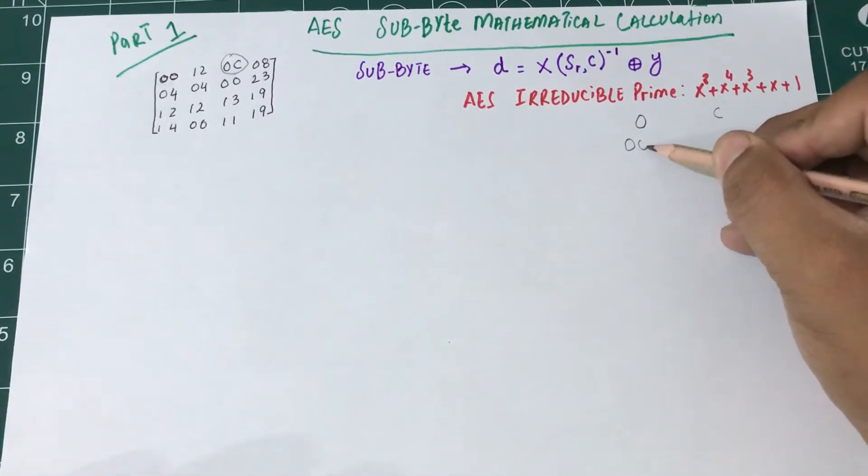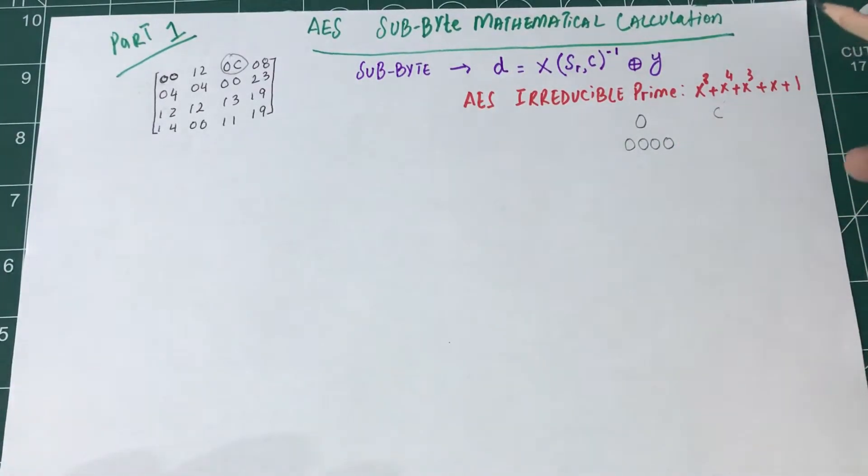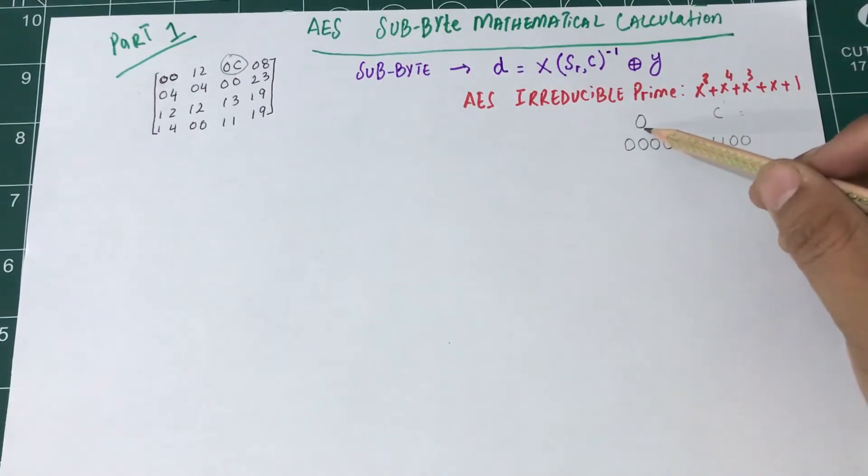0C: zero is 0000 in bits. What is C? After 9, we have 10 is A, 11 is B, 12 is C. So 12 is actually C. How do I transform 12? That's 8 plus 4, so 0C in binary is 00001100.